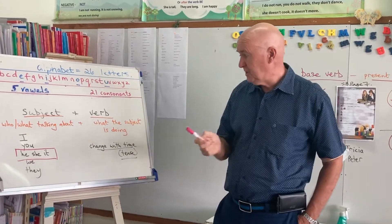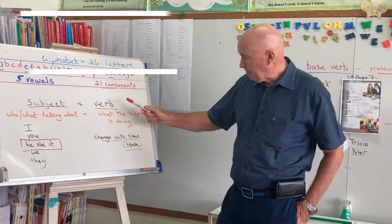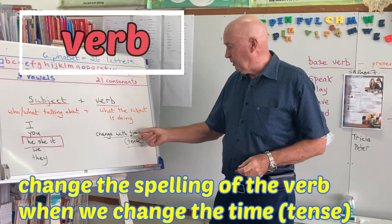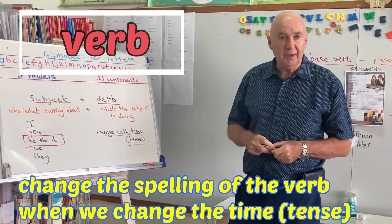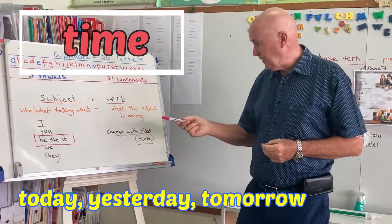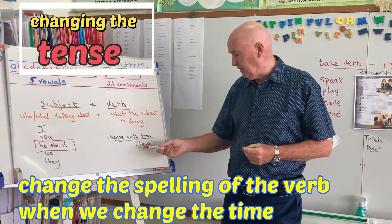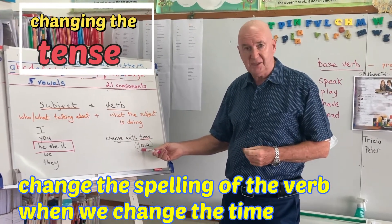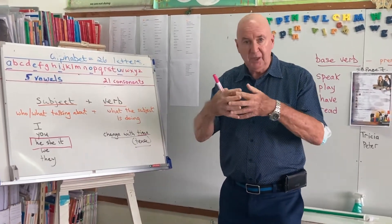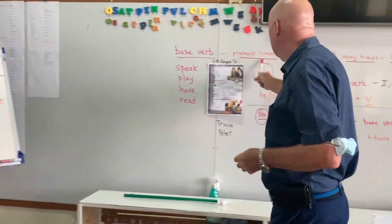What makes English a little bit difficult is that when we put the subject and the verb together, we sometimes change the spelling of the verb when we change the time. If I'm talking about today, yesterday, or tomorrow, we will change the spelling of the verb — and that is called changing the tense. Today we're going to look at the subject and the verb going together.